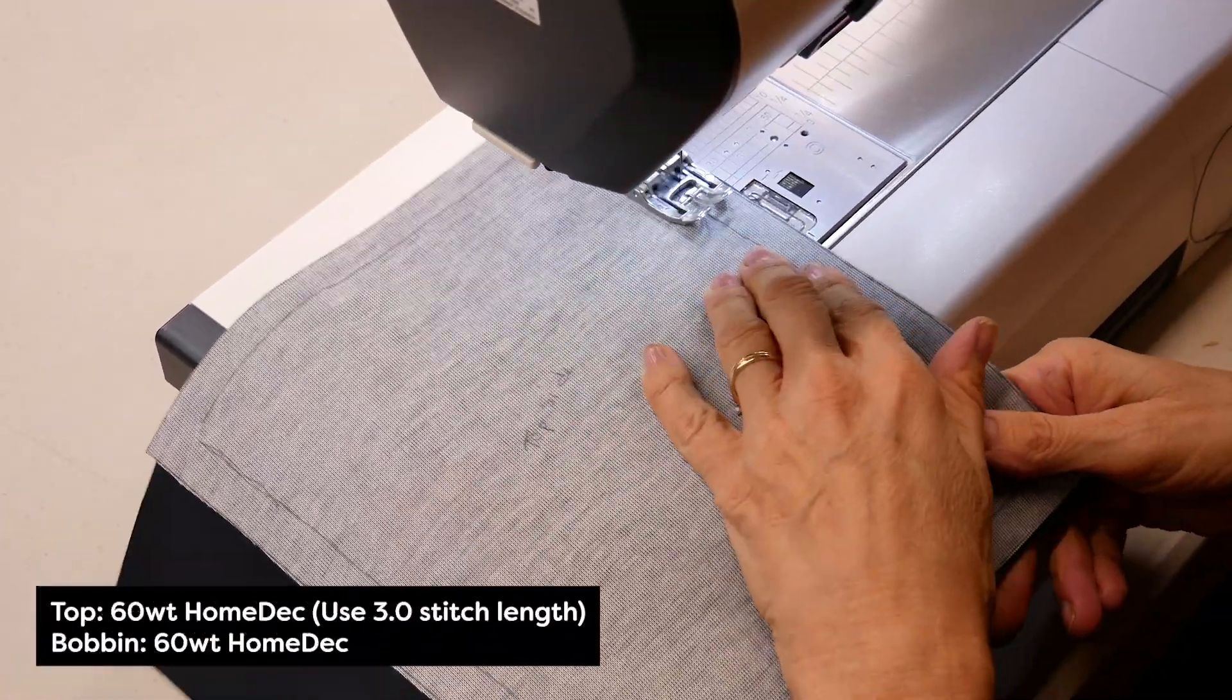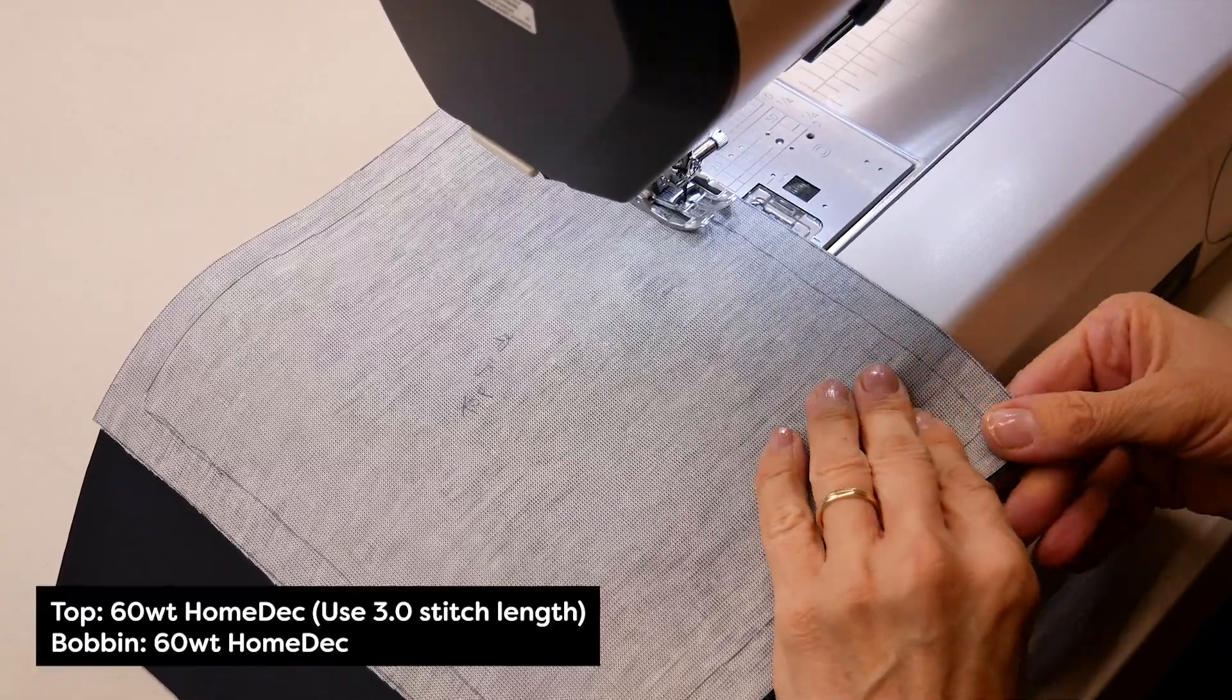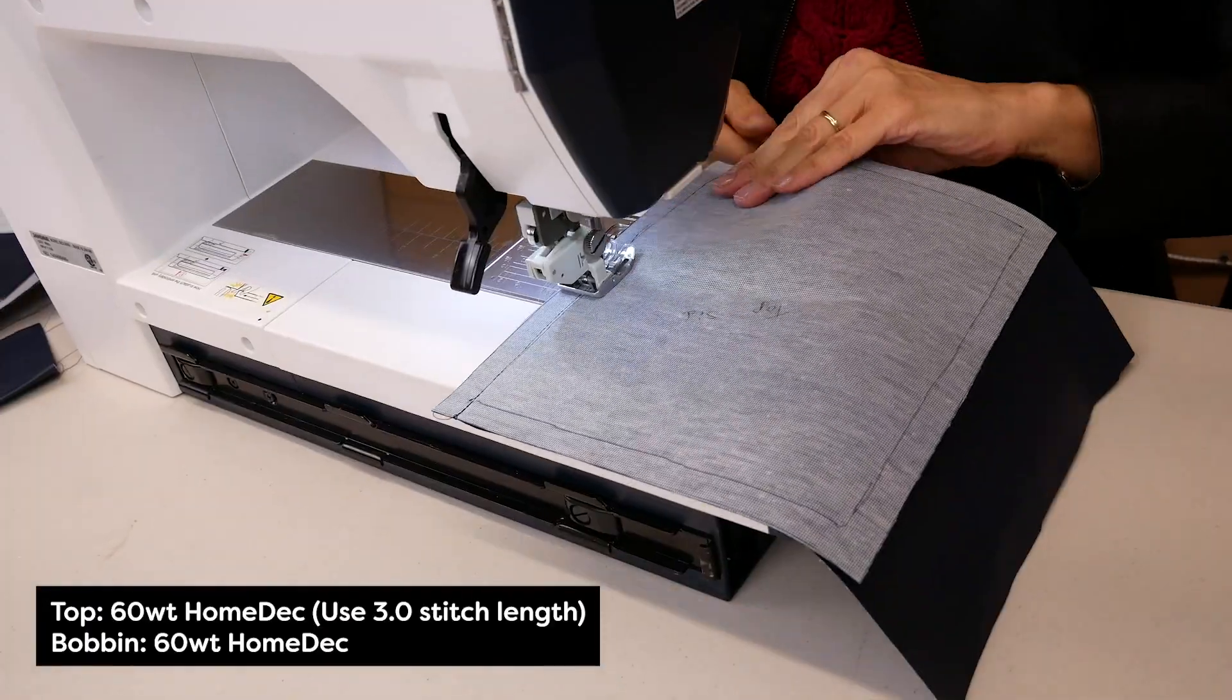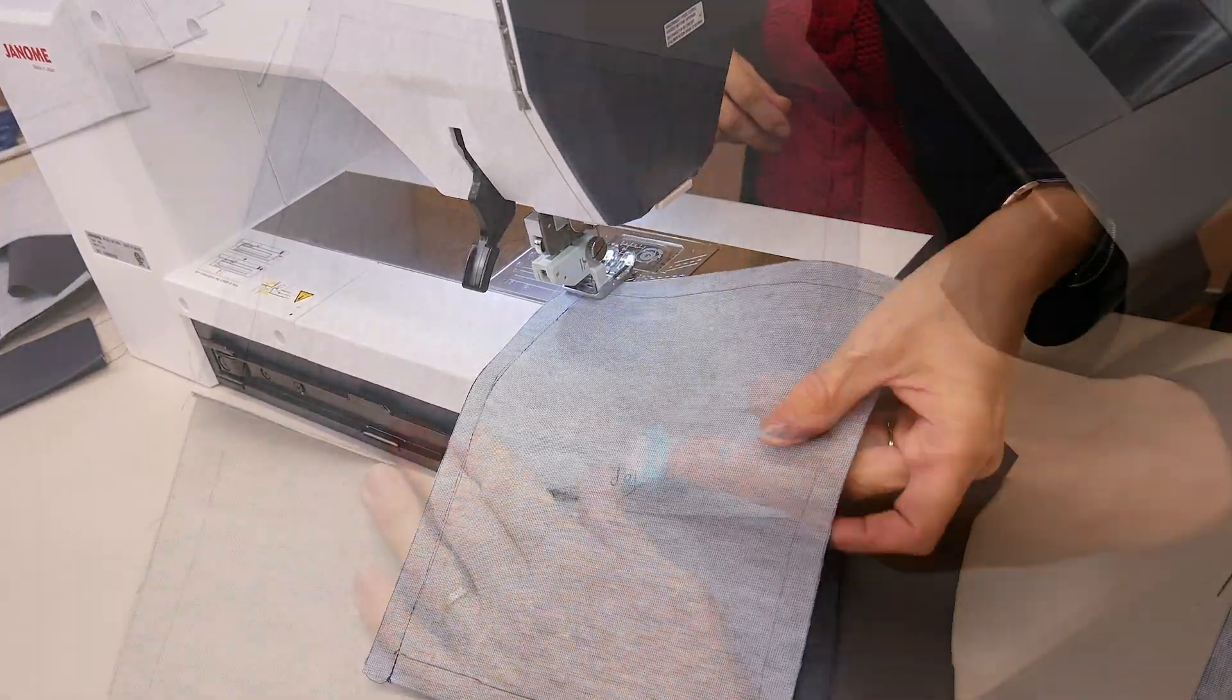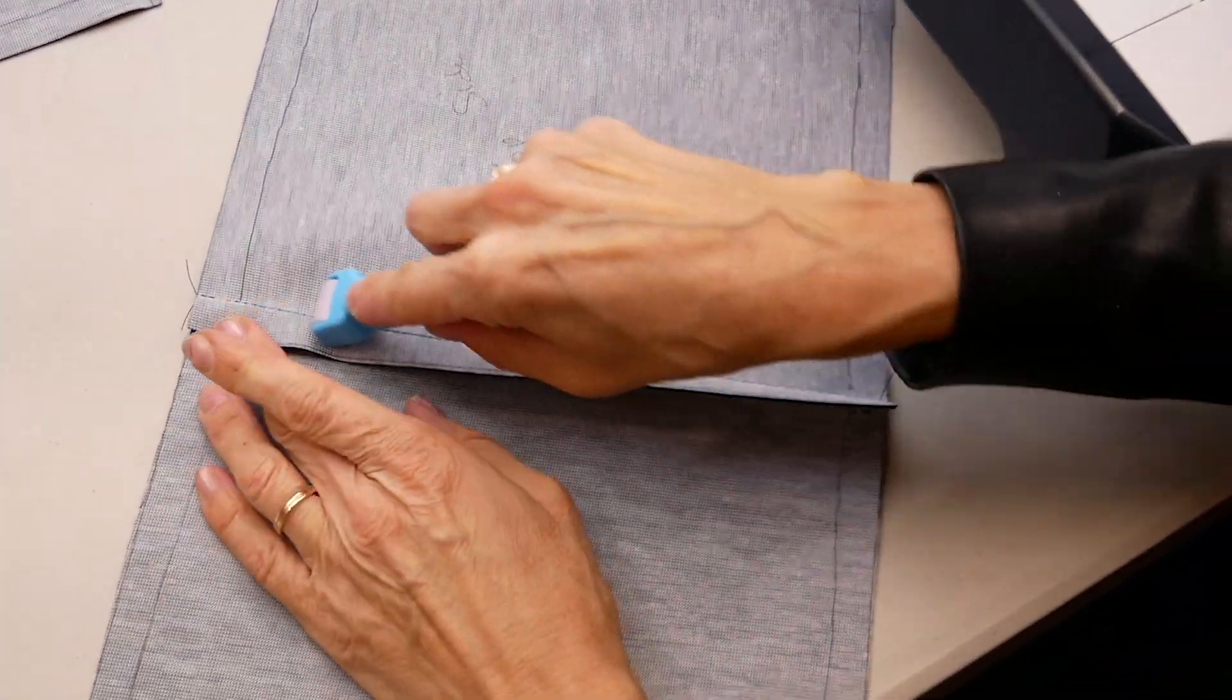With home deck 60 weight in the needle and bobbin of your machine, join the squares in pairs. Press the seam to one side with a seam roller.